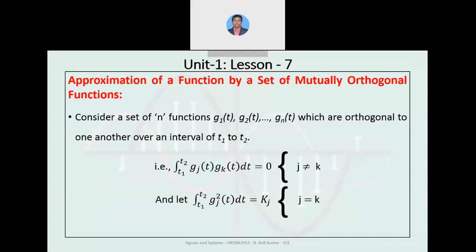Using the approximation of a function by a set of mutually orthogonal functions: for a given set of n orthogonal functions, how can the function be approximated? We are considering n functions represented as g1, g2, and so on, which are orthogonal to one another over an interval t1 to t2.